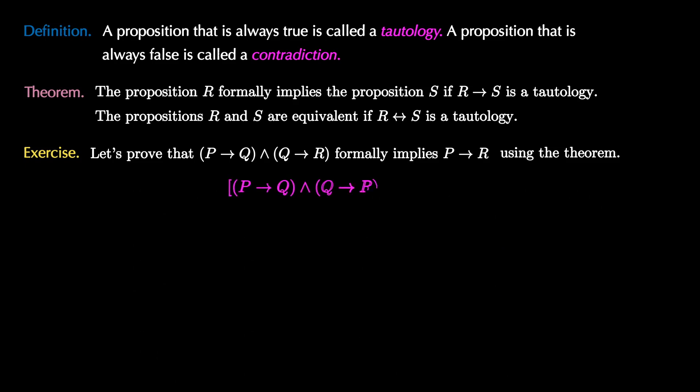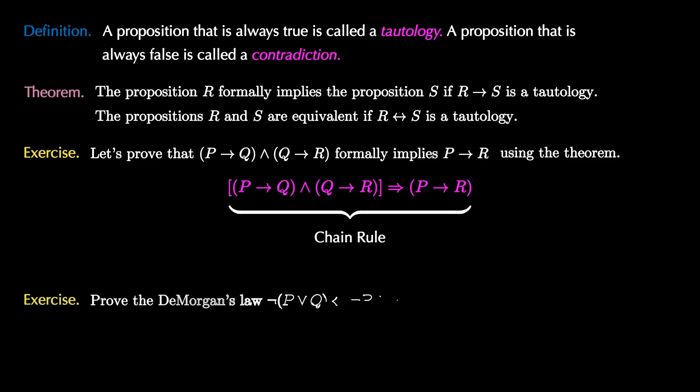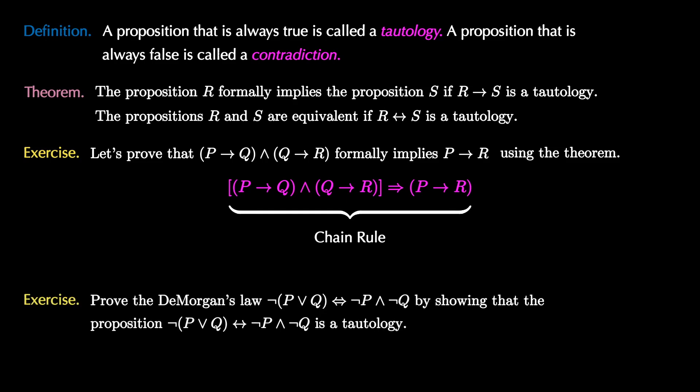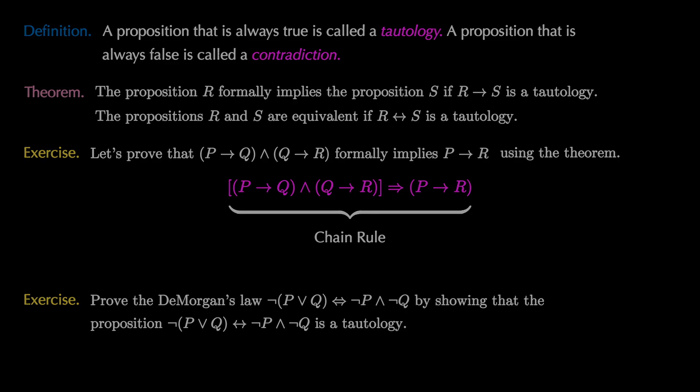This rule of logical inference is known as the chain rule. If you'd like to practice using the theorem, try to prove De Morgan's law — that not P or Q is equivalent to not P and not Q — by showing that the proposition not P or Q if and only if not P and not Q is a tautology.